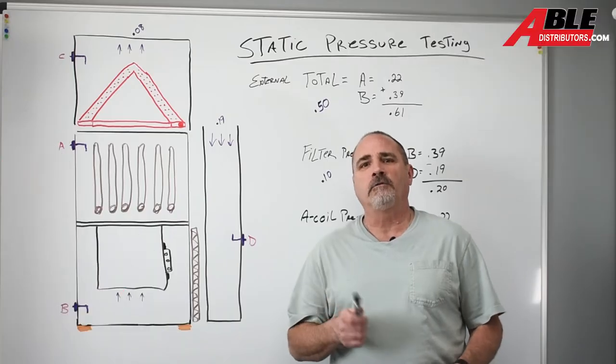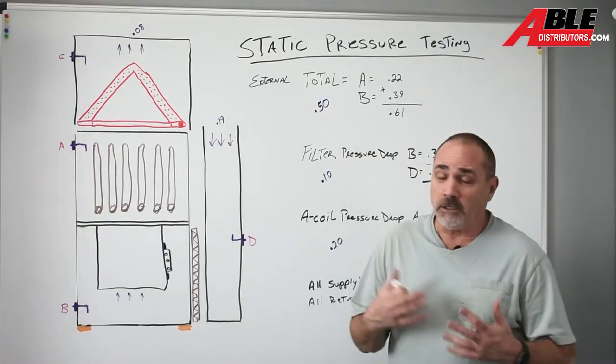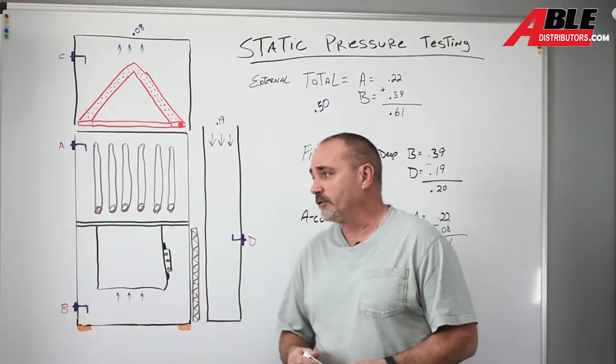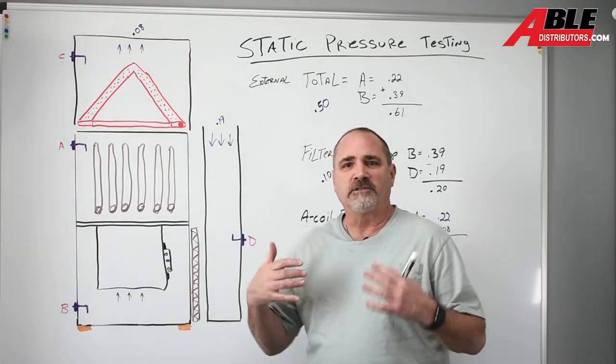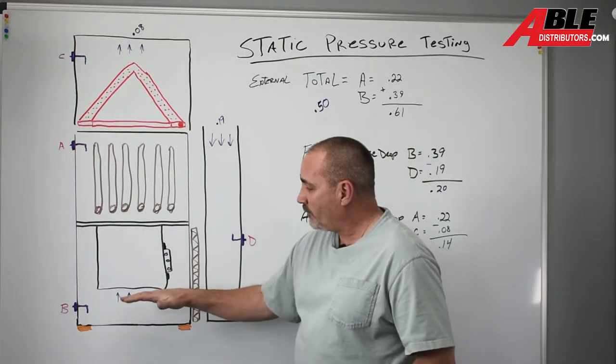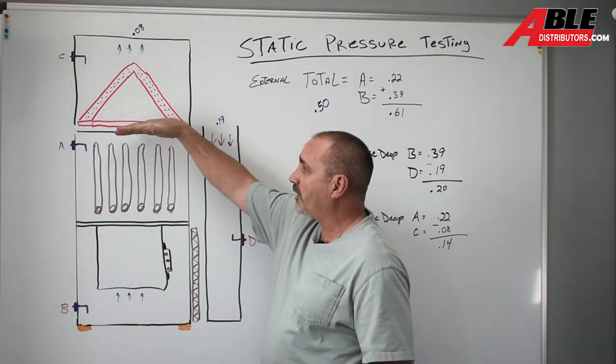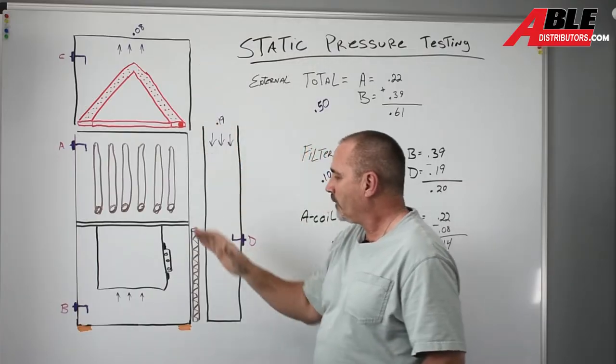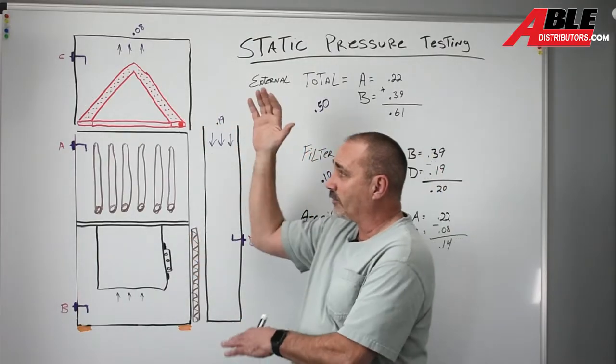Today I wanted to talk to you about static pressure. It's something that we all need to know, we need to check, but very few contractors actually do it. So typically we start at total external static pressure, and by external what we're talking about is everything outside the furnace. Everything on the supply duct from the top of the furnace away and everything from the side of the furnace away on the return duct. Everything outside the furnace.